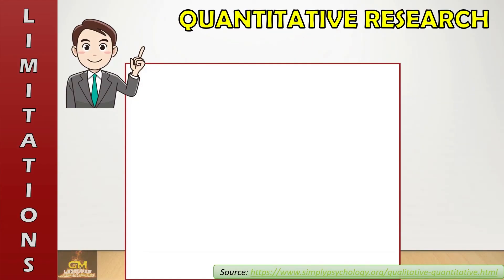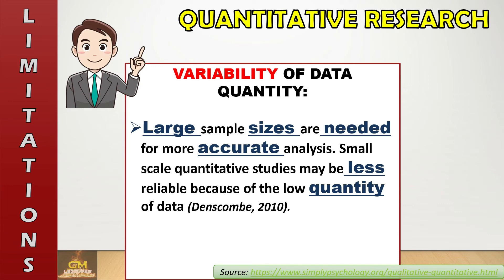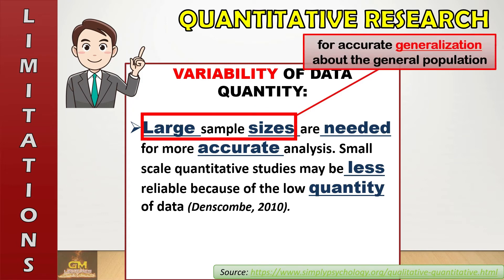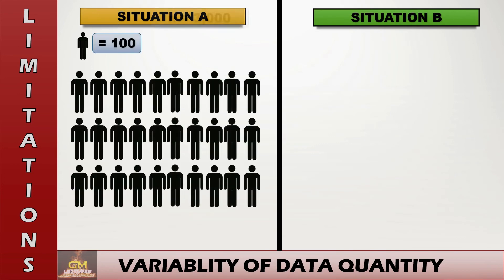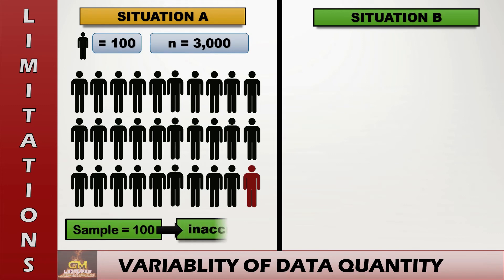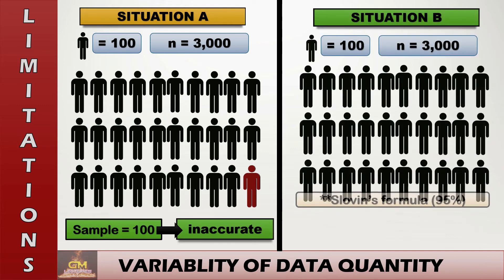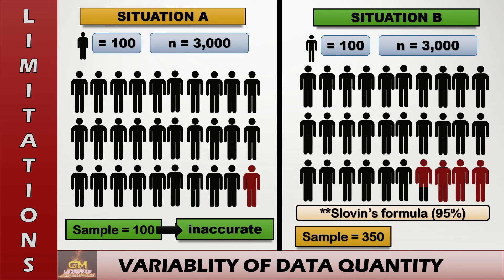Another limitation of quantitative research is variability of data quantity. Large sample sizes are needed for more accurate analysis. Small-scale quantitative studies may be less reliable because of the low quantity of data. This is according to Denscombe in 2010. Quantitative research usually requires large sample sizes for accurate generalization about the general population. The larger the sample population, the more accurate the results tend to be. For example, from a total of 3,000 people, simply selecting 100 participants is considered inaccurate. However, once we apply Slovin's formula, we arrive at 350 representatives, which is considered accurate and valid to represent the entire population.